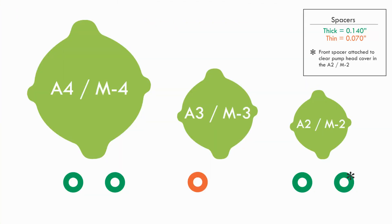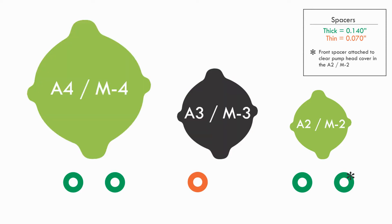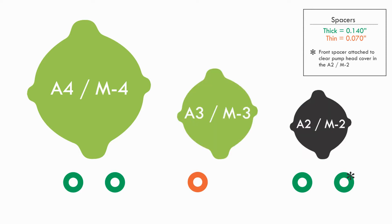First, let's break down which spacers are required for the three different FlexPro pump roller assemblies. The largest roller assembly requires one thick spacer in the front and one in the back. The medium size assembly for the A3 and M3 pump requires just one slim spacer in the back. The small A2 M2 pump requires the same as the A4 and M4 pump, one thick spacer in the front and one thick spacer in the back.